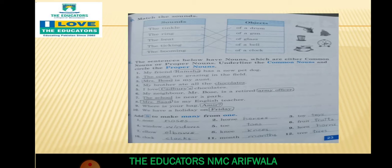Common nouns कौन से होते हैं? जो कि common होते हैं, किसी simple नाम से होते हैं। जैसे कोई शख्स है, कोई चीज है, कोई pencil है। जैसे कोई pencil है, कोई chair है, chocolate है - ये जो चीजें होती हैं यह आम होती हैं। जो proper होती हैं वो खास होती हैं।